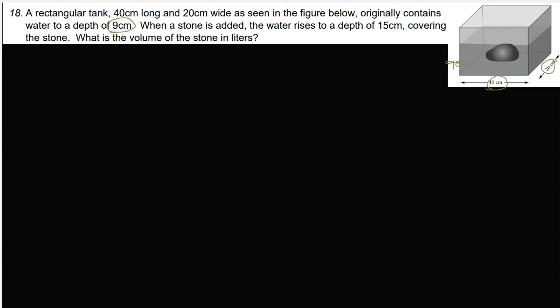Then we drop in the rock and the water level went up to 15 centimeters, so we have a displacement of 6 centimeters. The volume of that displaced gap is the volume of the rock, and then we can convert that into the actual measurement we want.